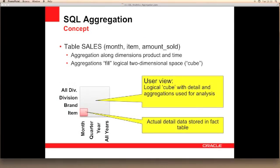So, if we have a fact table called sales, based around two dimensions — time and product — the fact table will contain time IDs for months, product IDs for items, and we'll have the amount sold. The base fact table contains only the base data, but obviously our business users want to view a logical cube containing subtotals and grand totals to help them drive their analysis.